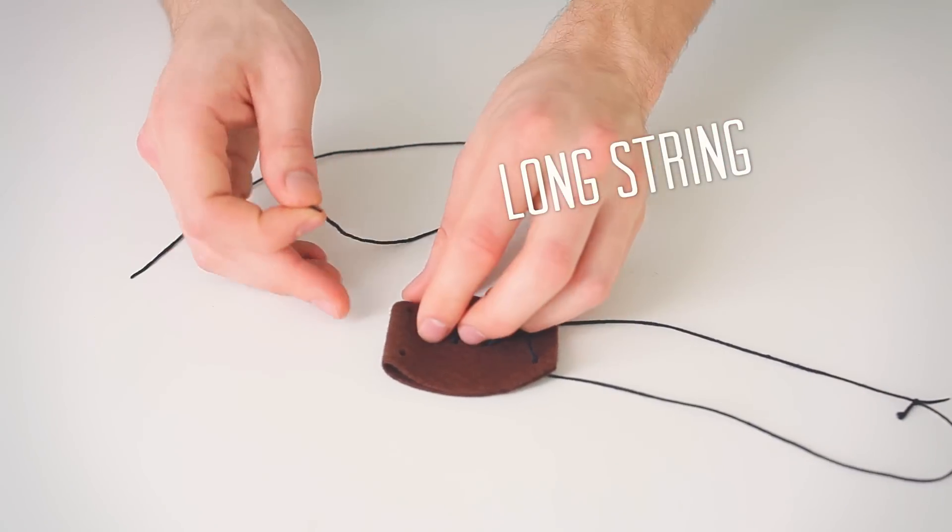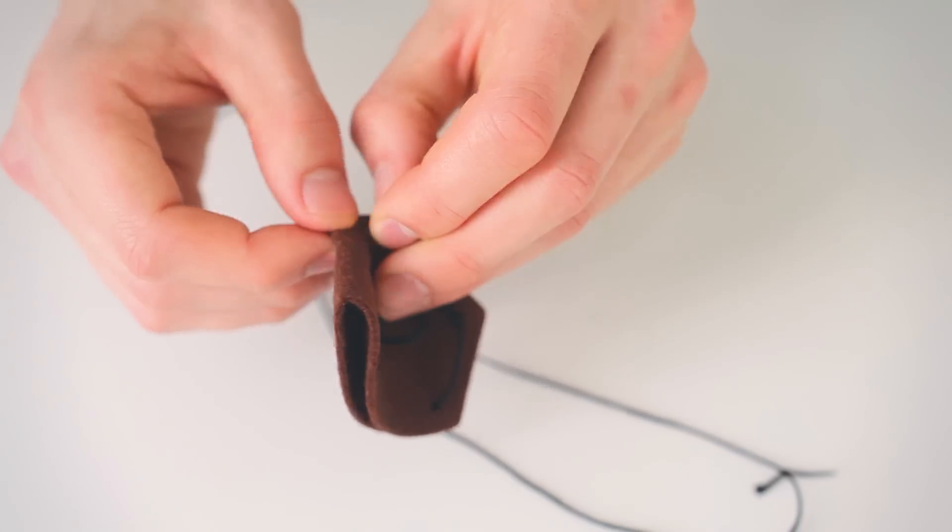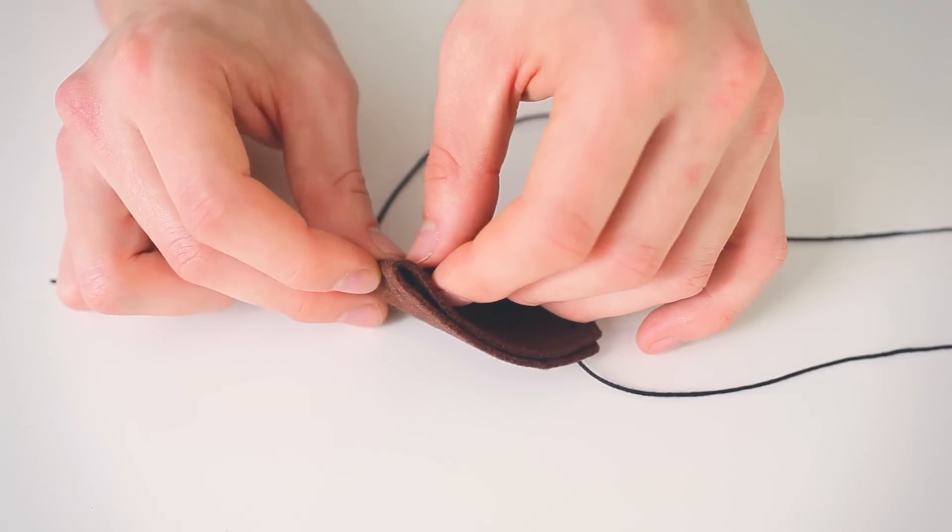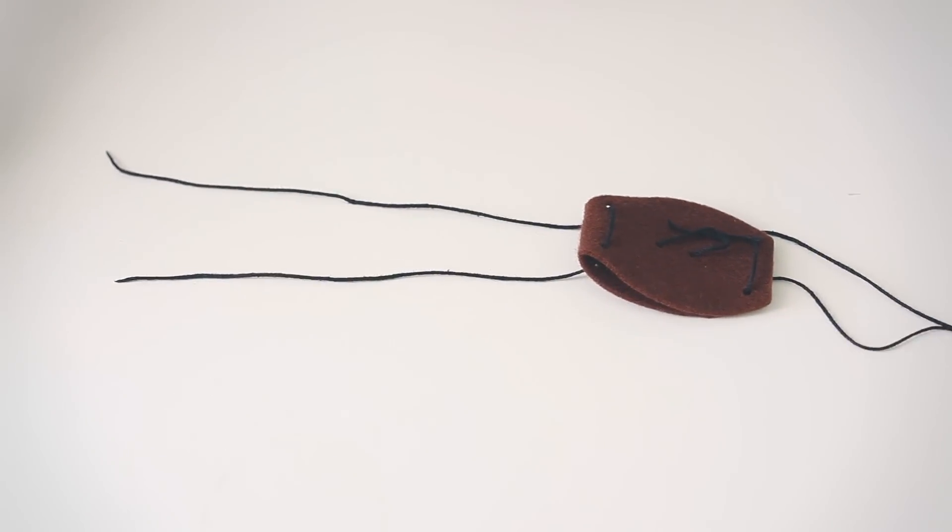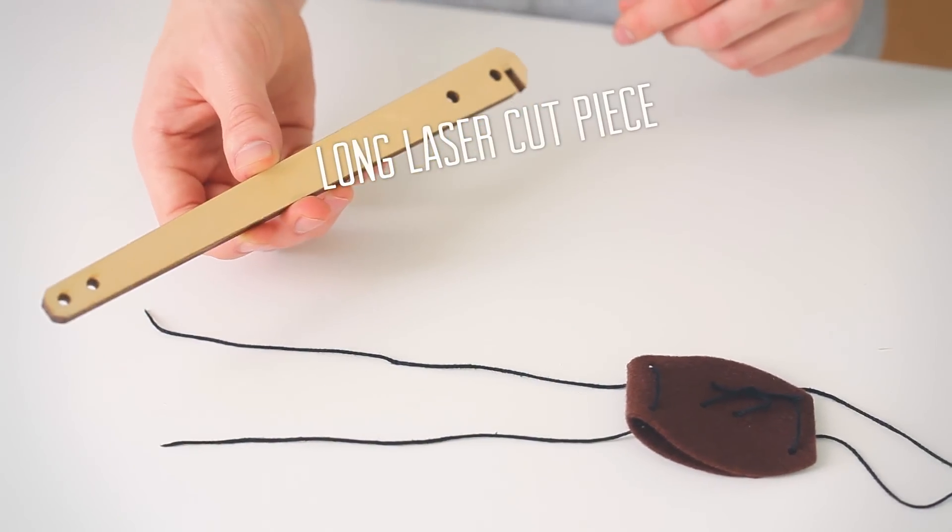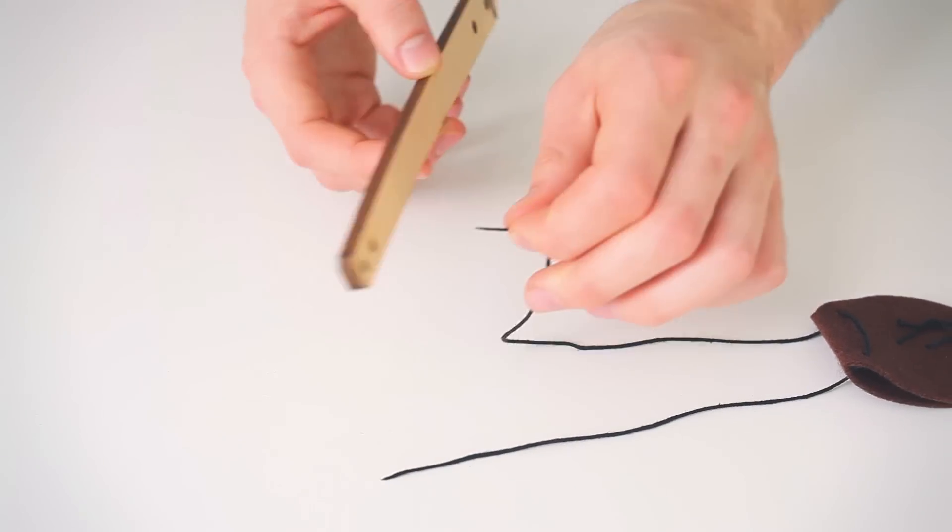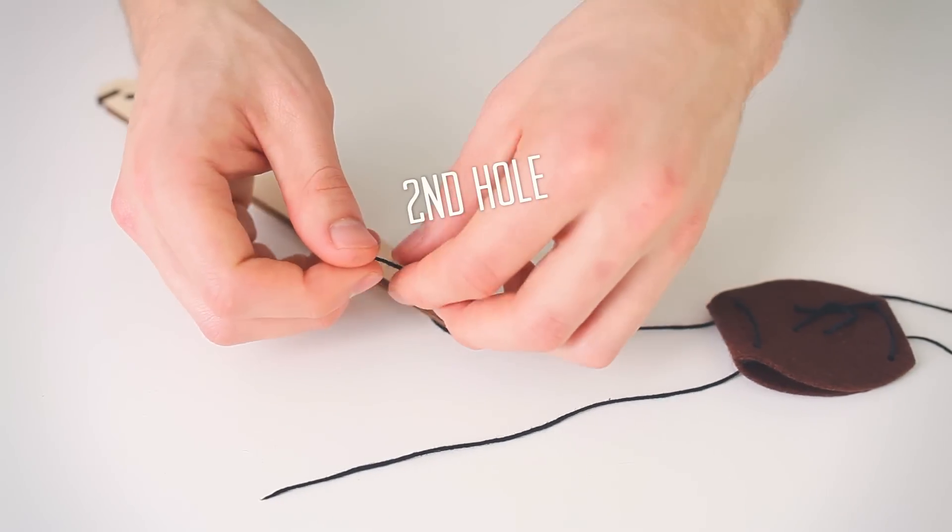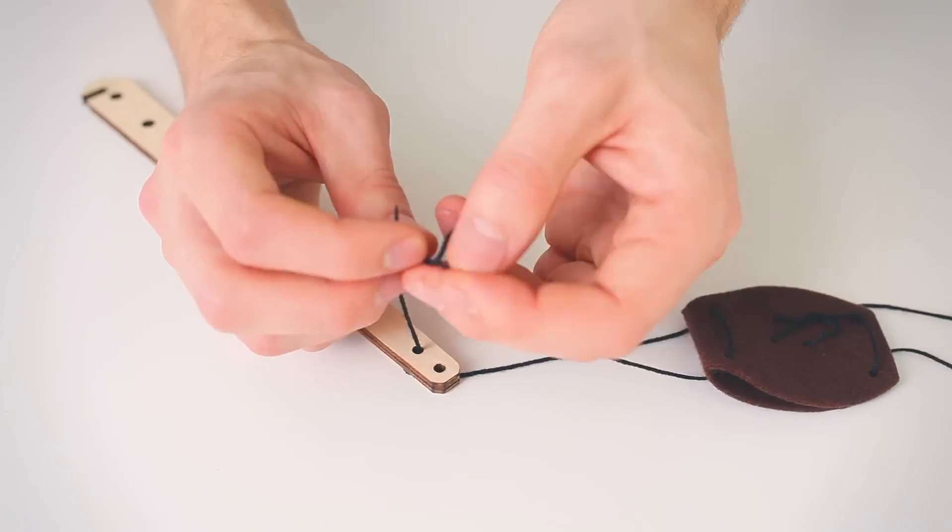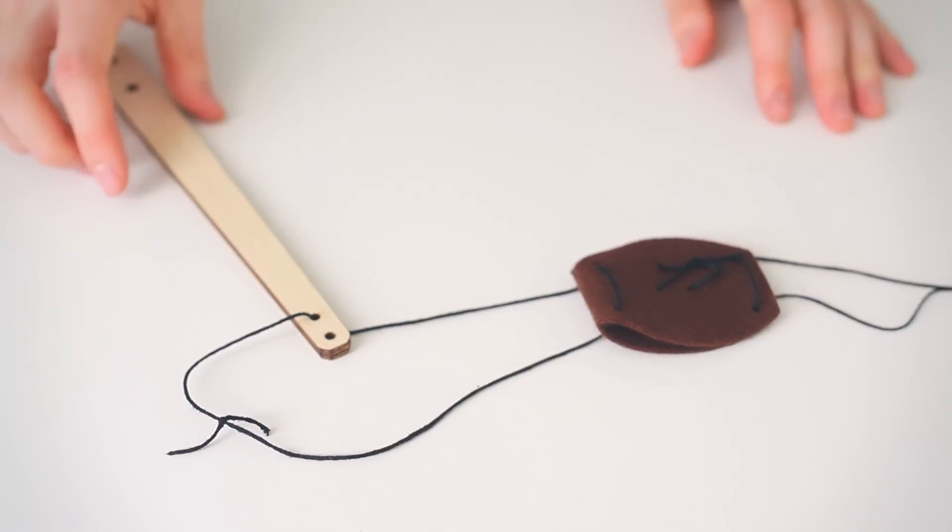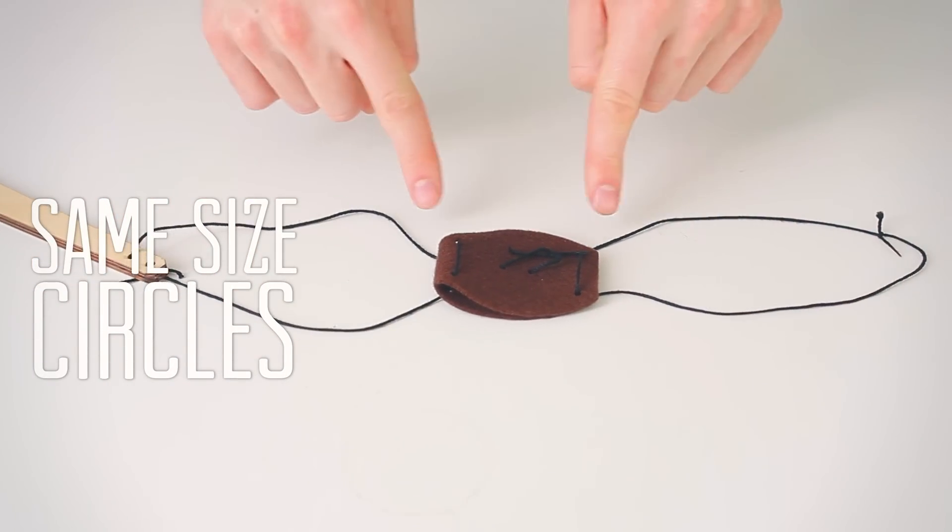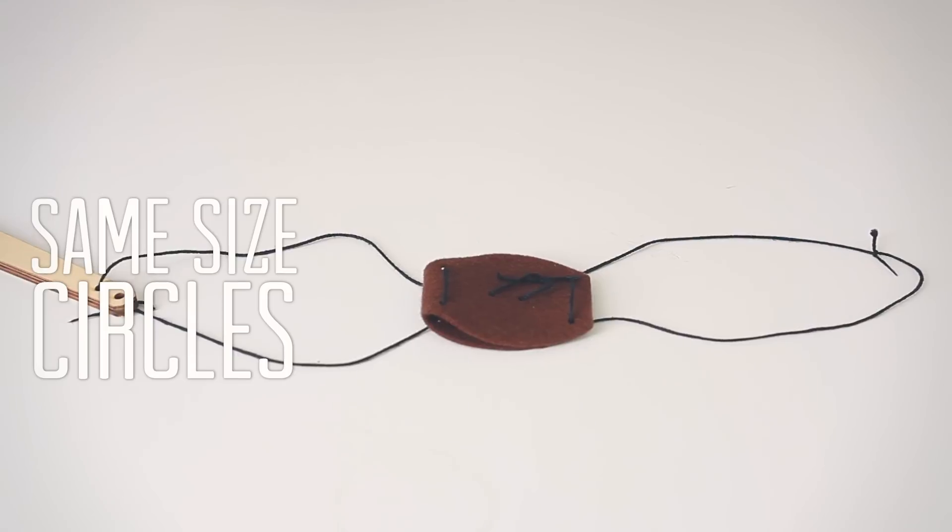Next take your second long string and thread it through the other two holes. Now before you tie the ends of this one you actually want to take your long laser cut piece and thread the string through the second hole. Then tie the knot and make sure that the circle you've just created is the same size as the first circle you tied with the other long string.